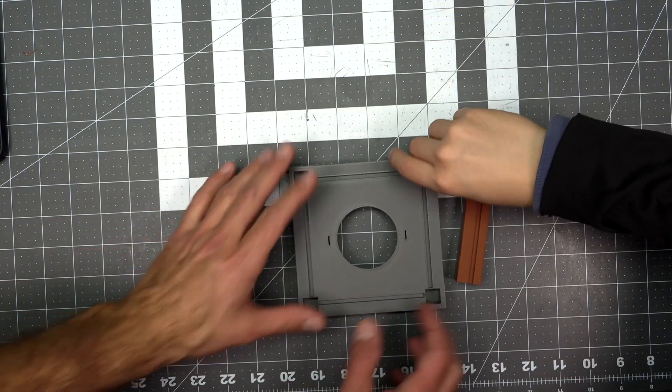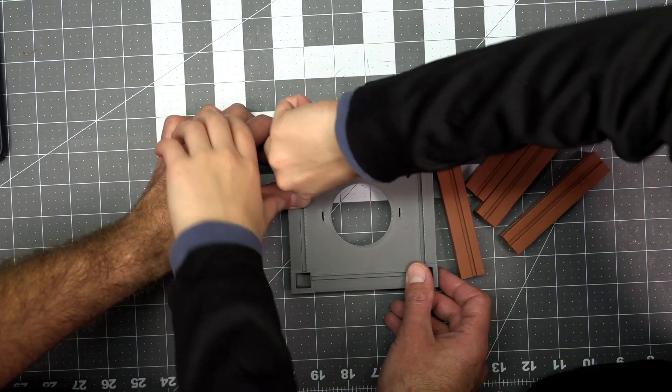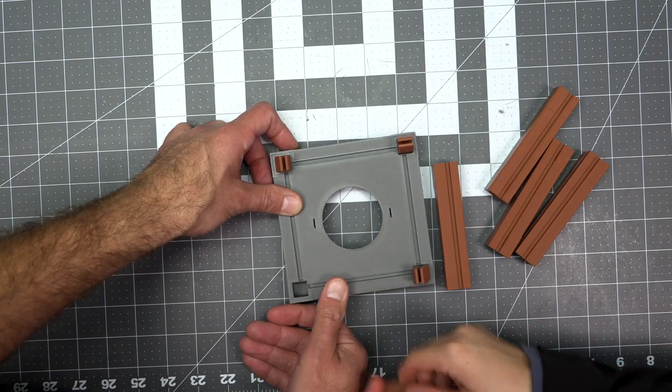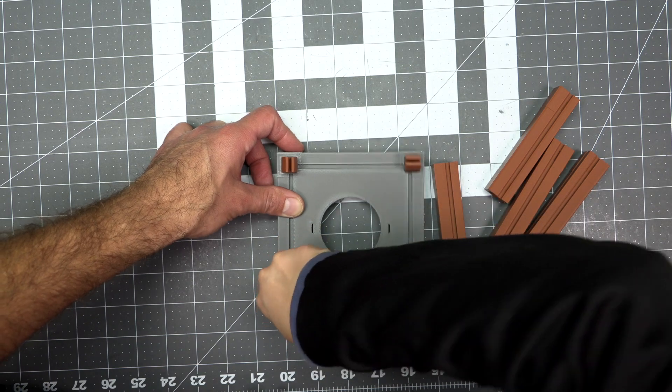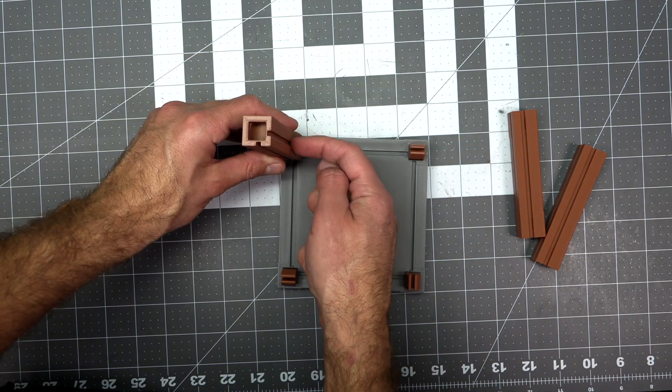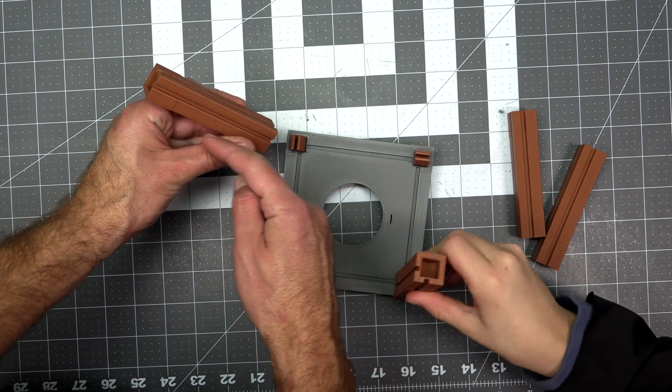Then you're going to assemble the bottom of the lantern. All those connector clips go into those square holes, and then the brown posts connect on top of those connector clips. Make sure the slits in the brown posts line up with the slits in the gray base.